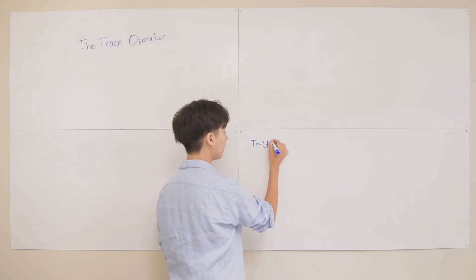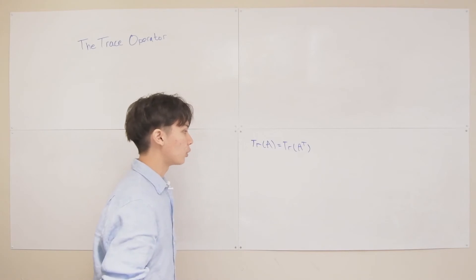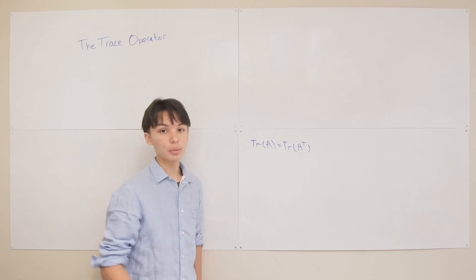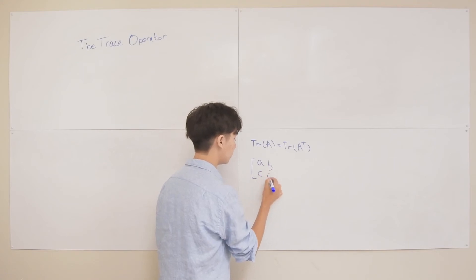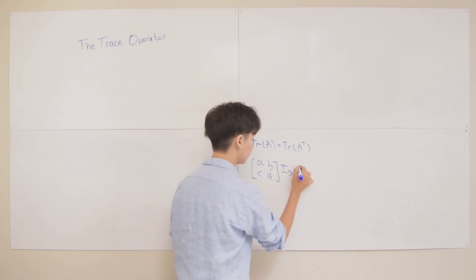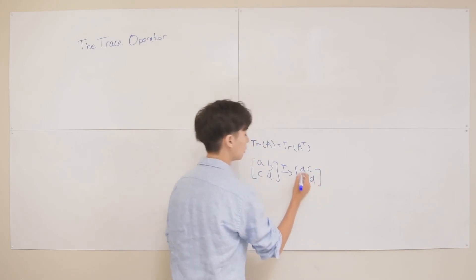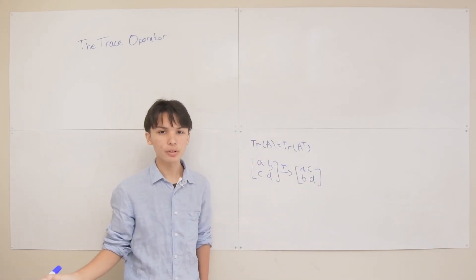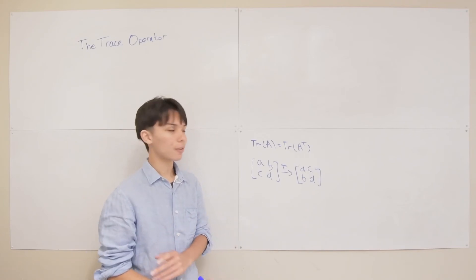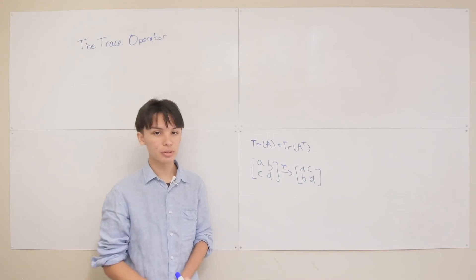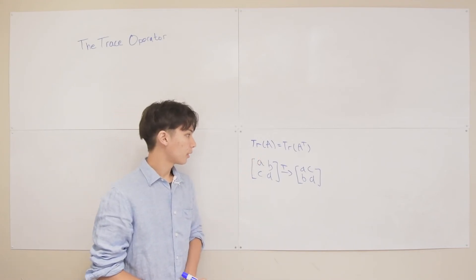The first property of the trace operator is that it's transpose invariant, which sounds fancy but is extremely simple. If we have the trace of some matrix A, it's equal to the trace of A transpose, because when you transpose a matrix the diagonal elements stay stationary. For example, if we have A, B, C, D, when you transpose it you get A, C, B, D — the diagonal elements are still A and D. This applies for any square matrix.